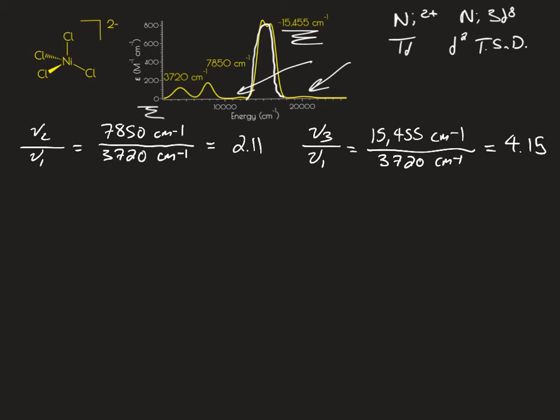And what we're going to do is we're going to compare these to E over B ratios from the D2 Tanabe-Sugano diagram. To help guide us to see where we should be looking for our delta over B on the D2 Tanabe-Sugano diagram, we're going to remember from crystal field theory that delta T equals 4/9 delta O.